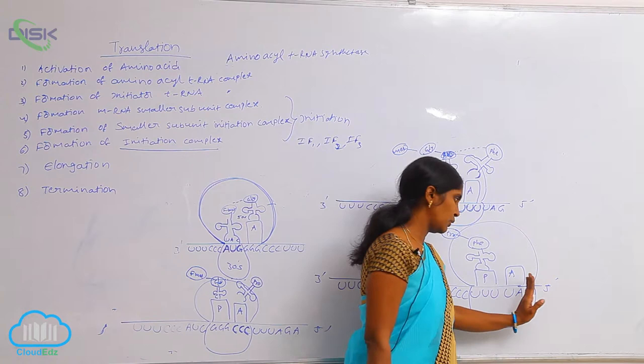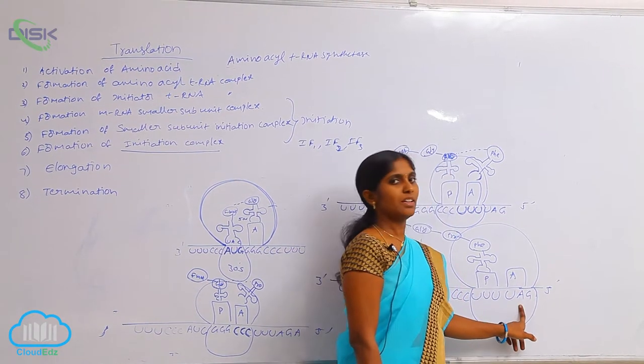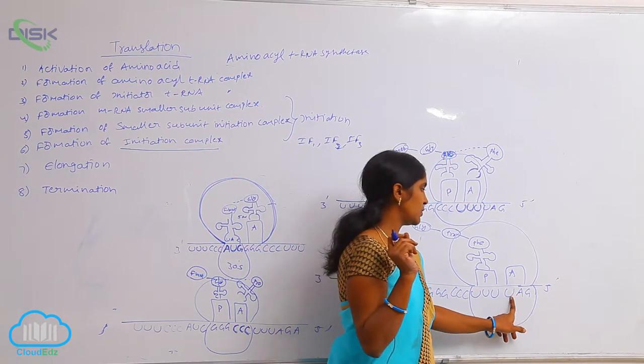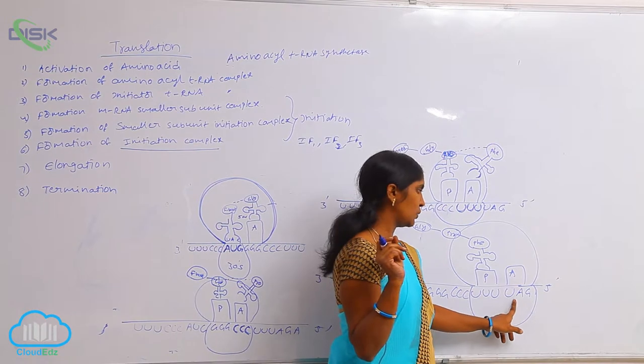So, when the ribosome subunit reached on to the amino acid site, here the codon is termination codon. Termination codon means AUA, UAG and UGA. But here UAG is present.